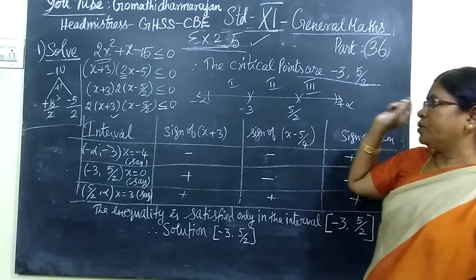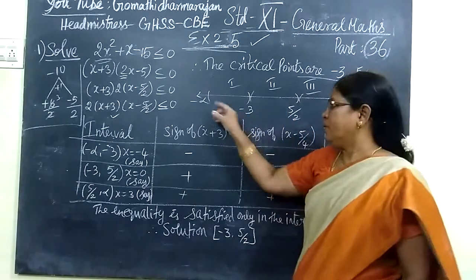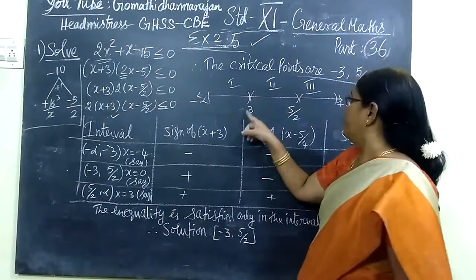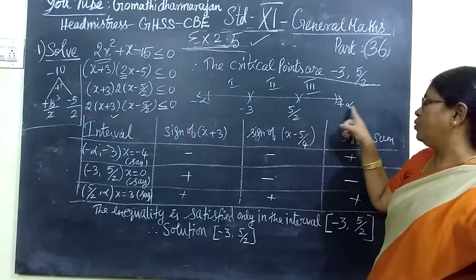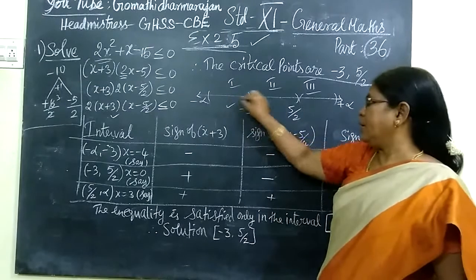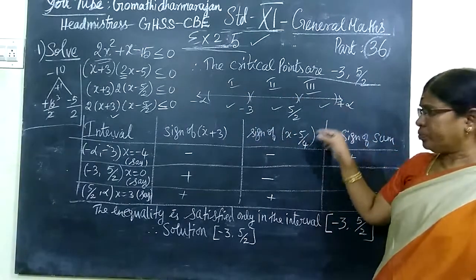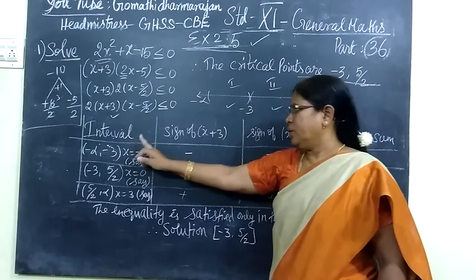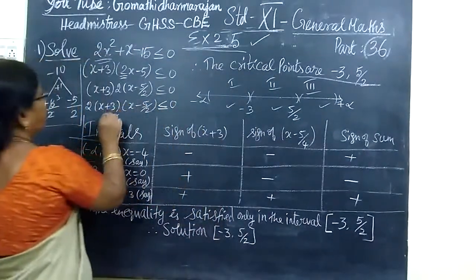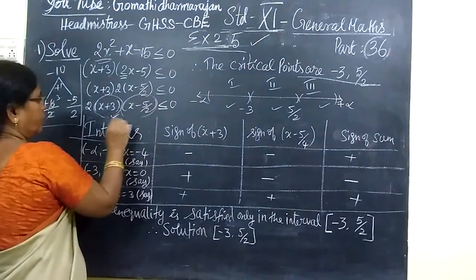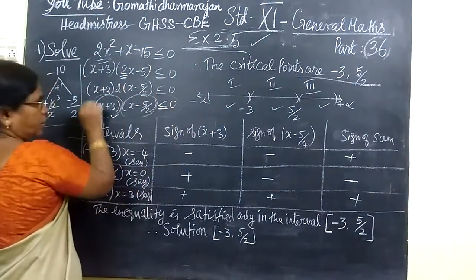Plus 3 minus 3 minus 5 by 2 means plus 5 by 2. So, the critical points. And you are making the intervals minus infinity to minus 3, minus 3 to 5 by 2, 5 by 2 to infinity. So, you are getting 3 intervals. Then, sign of first one and sign of second one. Then, the total is formed.